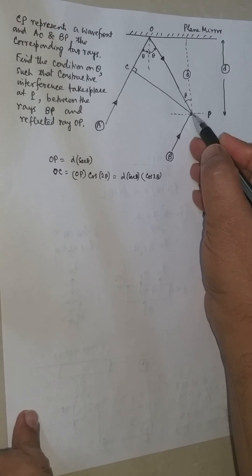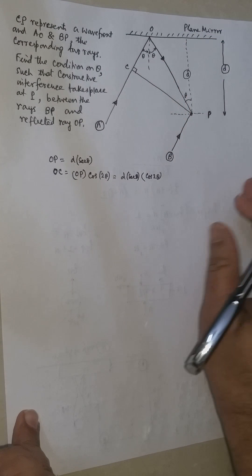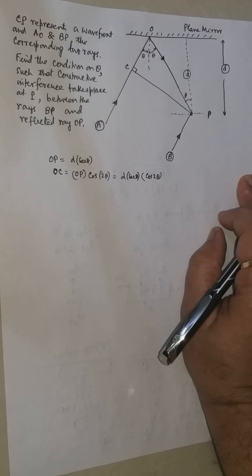Now at point P, for constructive interference to take place, the path difference should be N times lambda, where N may be any number 0, 1, 2, 3, etc.